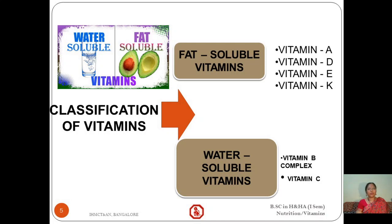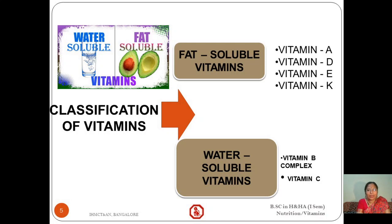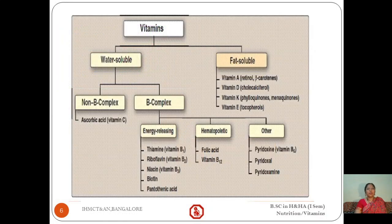Vitamins are classified into two major categories: fat-soluble vitamins and water-soluble vitamins. Fat-soluble vitamins are vitamin A, vitamin D, vitamin E, and vitamin K. Water-soluble vitamins are vitamin B complex and vitamin C. Looking at another chart on the classification: vitamin A is otherwise termed as retinol or beta-carotene, and vitamin D is otherwise termed as cholecalciferol.